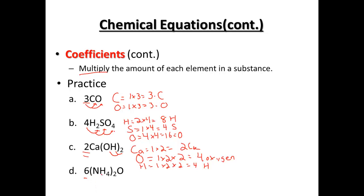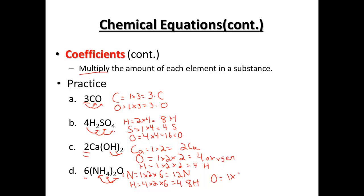For 6(NH₄)₂O — for nitrogen: one times two times the coefficient six out front gives us 12 nitrogens. For hydrogen: four hydrogens times the two from the polyatomic times the six out front — two times four is eight, times six is 48 hydrogens. For oxygen: one oxygen times six gives us six oxygens. We're going to use these coefficients, the numbers in front, to help us start balancing chemical equations.